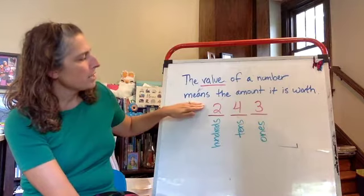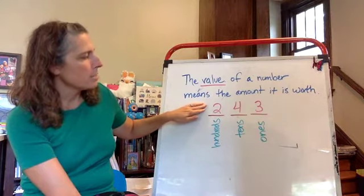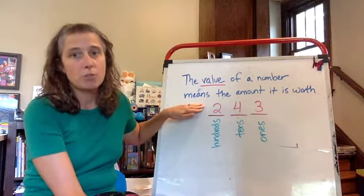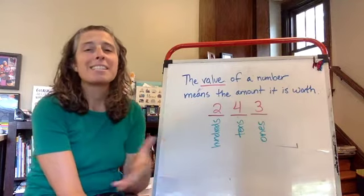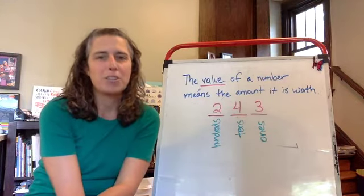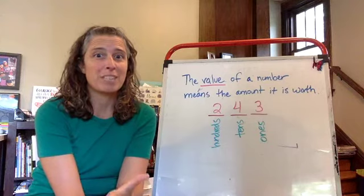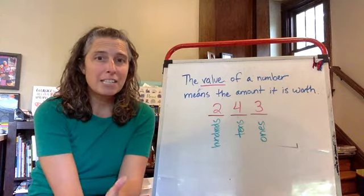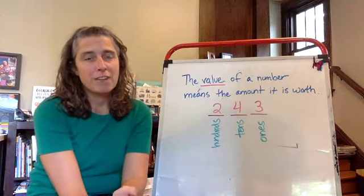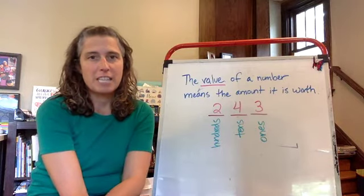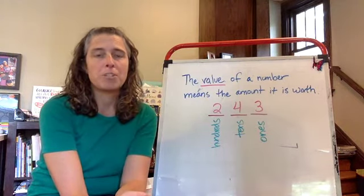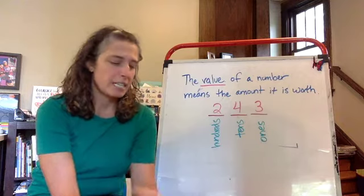You can look at this number I wrote right here and it does mean 243, because I've been listening to all of you read your numbers and you're doing just such a fantastic job. I've been really happy to hear that. But let's talk about the different values the different digits have because that's really important to know when we're talking about representing numbers.